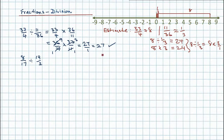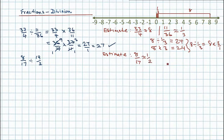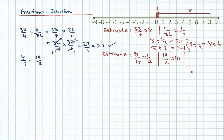Let's go over to the right and do an estimation. 8 17ths — that's approximately equal to a half. And 19 over 2, that's nearly 20 over 2, so approximately equal to 10. Now if we write this out as a half divided by 10, we can see what we're asking: how many tens are there in a half? That's the same as saying a half times a tenth — in other words, we should get the answer somewhere in the region of a 20th.